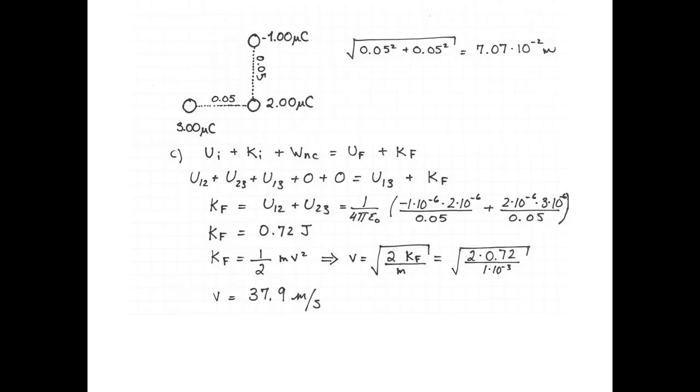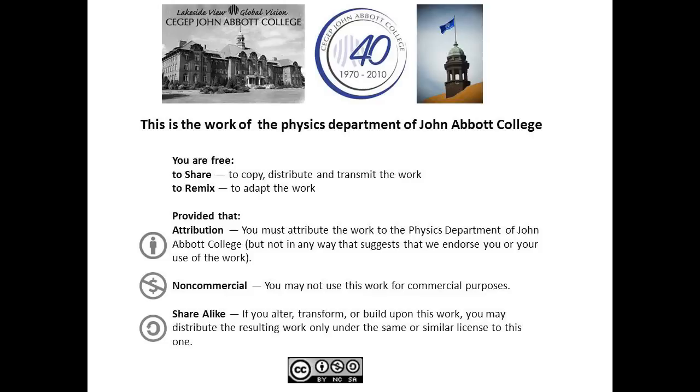Let's plug the numbers in. Remember that 1 gram is 10 to the negative 3 kilos, and we get a final speed of 37.9 meters per second. All done! Spread the joy of physics!